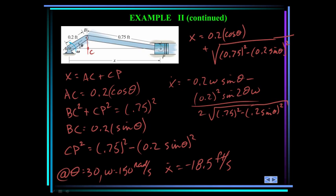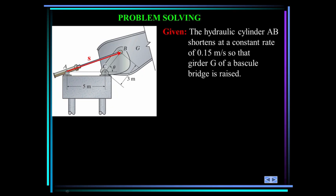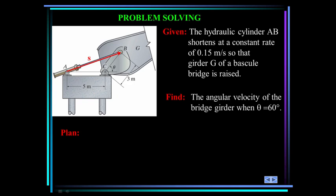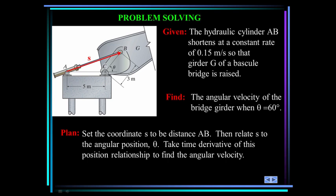Here's another problem. We have a hydraulic cylinder from A to B that shortens at a constant rate of 0.15 meters per second — constant, so s-double-dot is zero. When it does that, it raises the girder G of a bascule bridge, which is a drawbridge. Find the angular velocity of the bridge girder when theta is 60 degrees. The plan is to set coordinate s as the distance AB, relate s to theta, and take the time derivative to find the angular velocity.